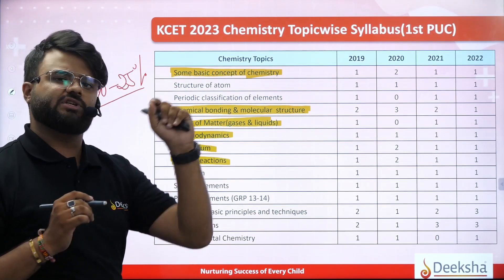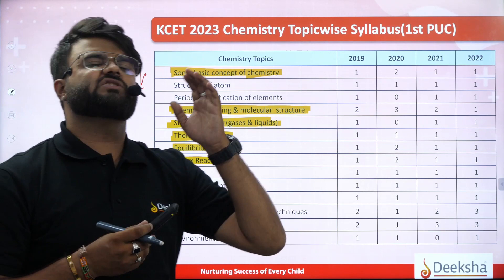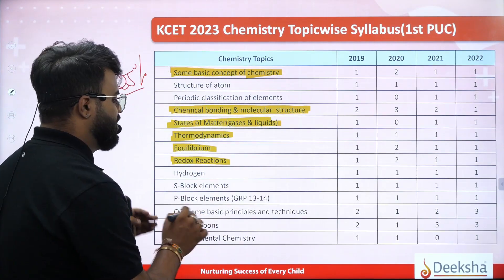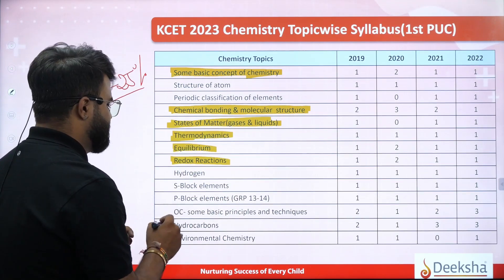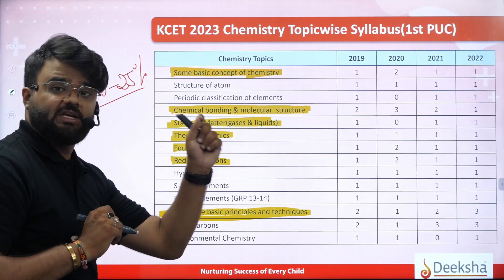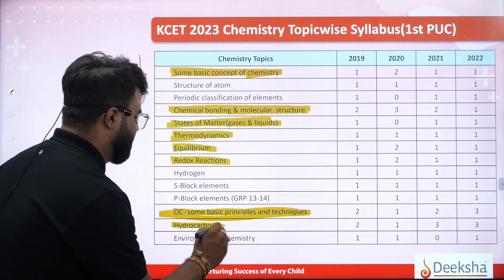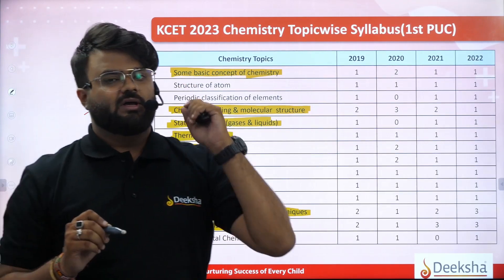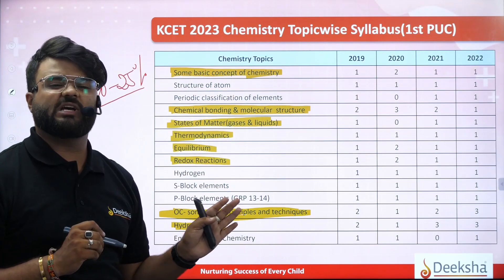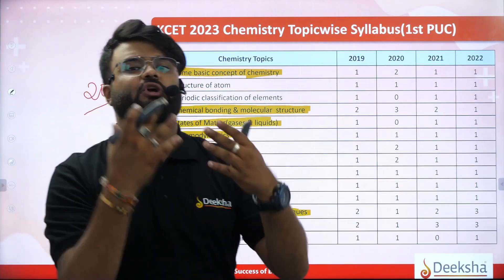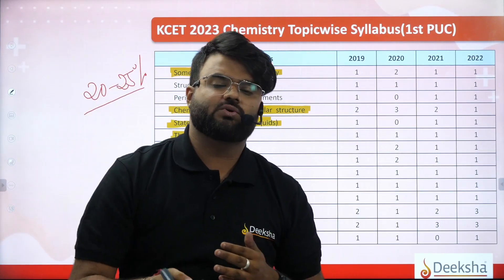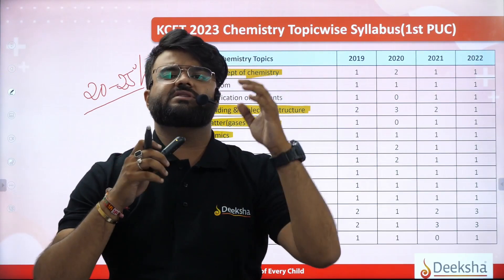Hydrogen — there is no question, but it is a very easy chapter. Coming back to S-block elements and P-block elements — same number of questions. But most important is some basic principles and techniques of organic chemistry in the first PUC, and coming back to hydrocarbons. Organic chemistry of first PUC is a very important chapter in the first PUC syllabus. So I have to tell you — there is a smart study plan.